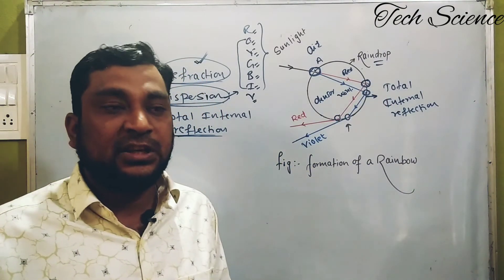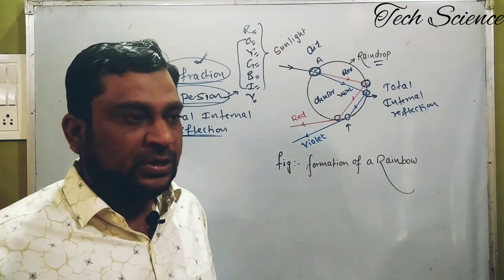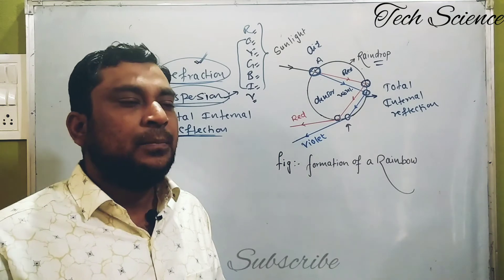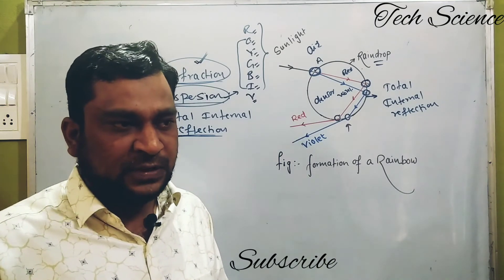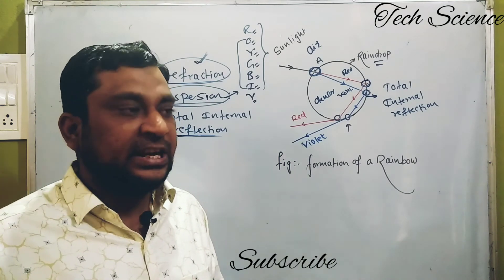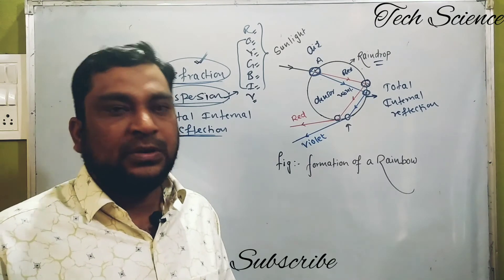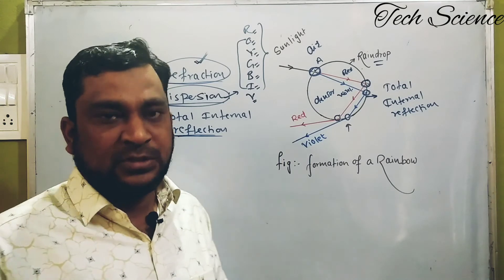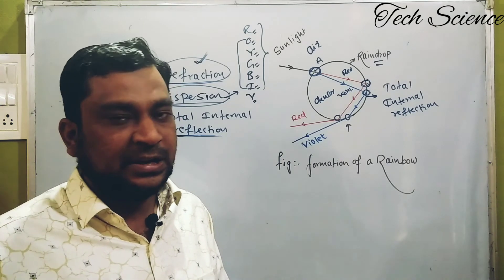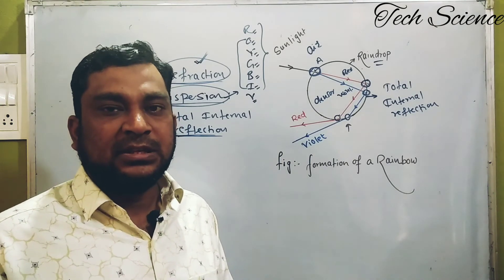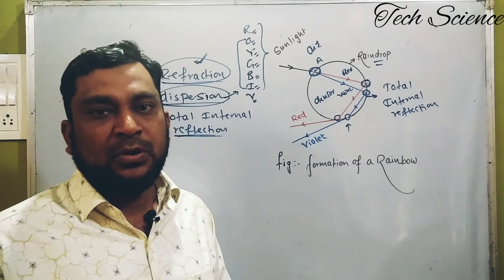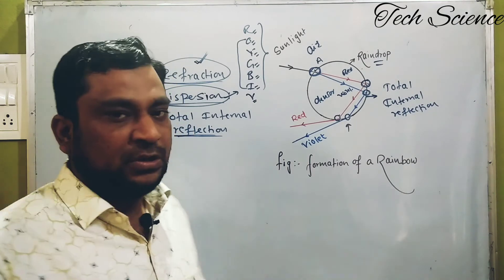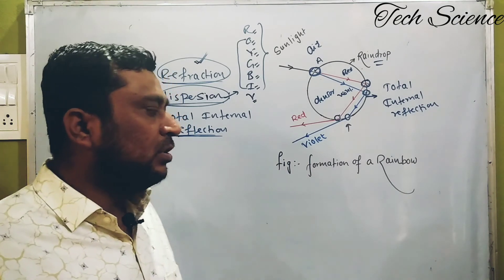The conditions for the formation of rainbow are: first, presence of sunlight; second, presence of water droplets in the atmosphere; and third, an observer. The observer's back must be towards the sun, so the rainbow appears in front of the observer. In between the sun and the rainbow there should be an observer, but the observer's back is towards the sun.